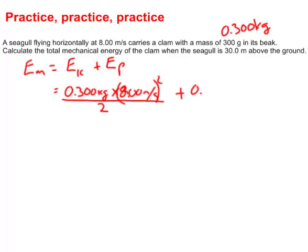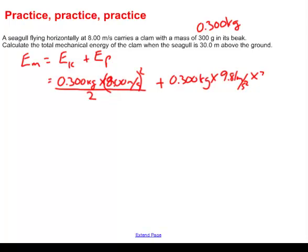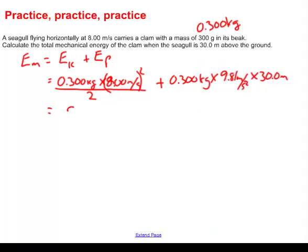Well, the mass was 0.300 kilograms multiplied by gravity on Earth, which is 9.81 meters per second squared, and then multiply that by the height above the ground, which was 30.0 meters. So there's all our numbers. Now it's time to get busy with our calculator. So let's have a look here. 0.3 multiplied by 8 meters per second squared, and that's going to be squared. So hit the square key, and then don't forget to divide your answer by 2. And what do we get? We get 9.6 joules.